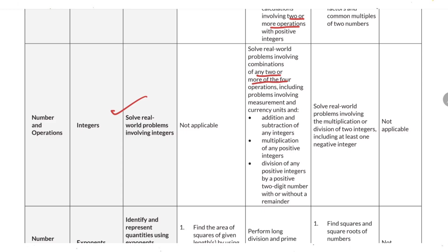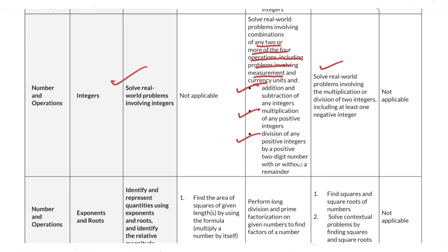For real-world problems involving integers, topics include combinations of two or more four operations including measurement and currency units — addition, subtraction, multiplication of positive numbers, division of any positive number by a two-digit positive number with or without a remainder. You should also solve real-world problems using multiplication or division of two integers including at least one negative integer.